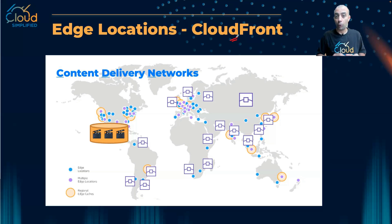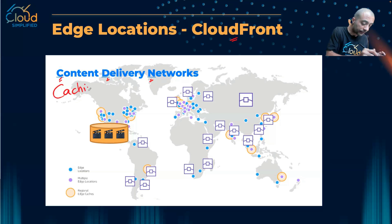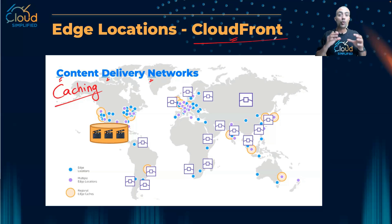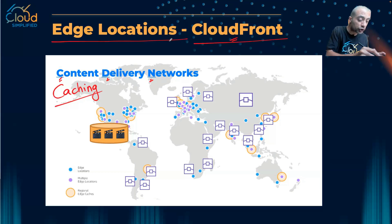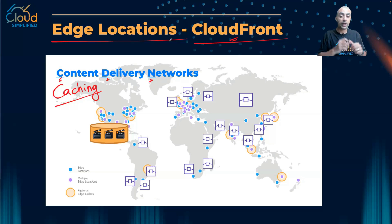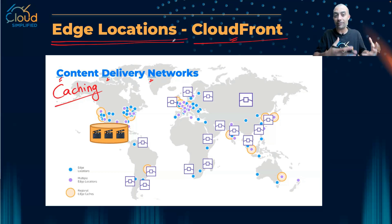CloudFront is AWS's content delivery network service, or CDN. In simple terms, CDN means caching. CloudFront runs in what we call edge locations. From the previous lesson on regions and availability zones, we saw on the AWS global infrastructure homepage that AWS has 31 regions, 99 availability zones, and more than 450 edge locations — and this is where CloudFront lives as a service.